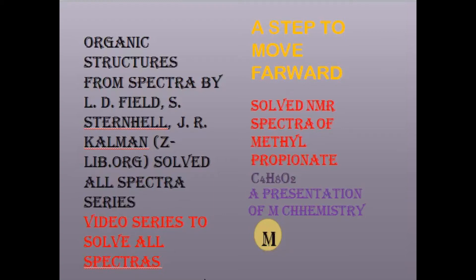Assalamu alikum viewers! Today we are going to solve the NMR spectra of methyl propionate. The chemical formula of methyl propionate is C4H8O2.